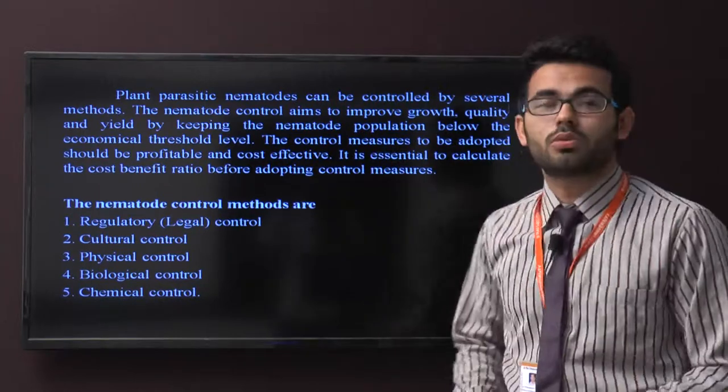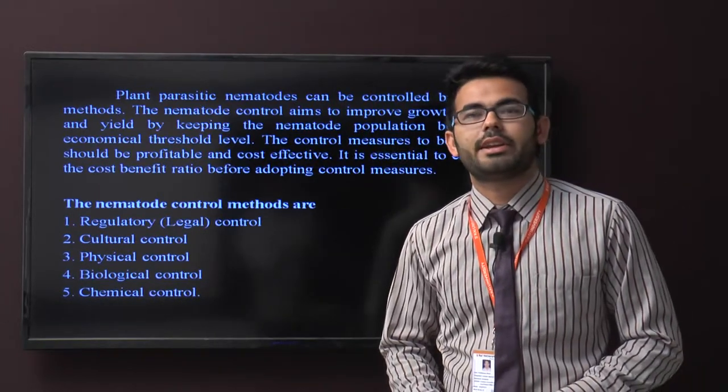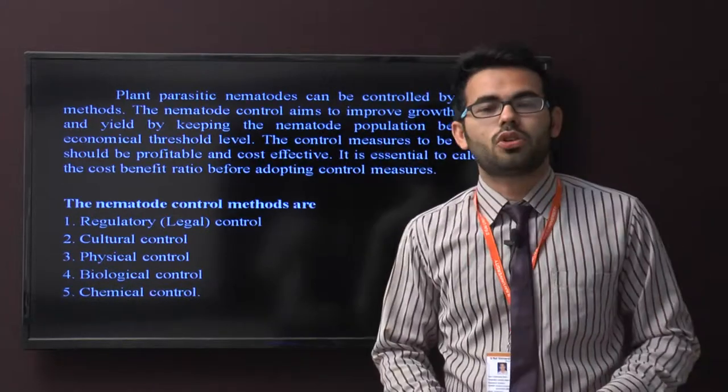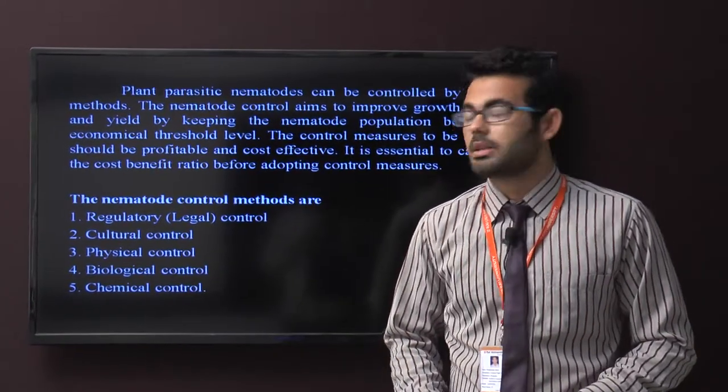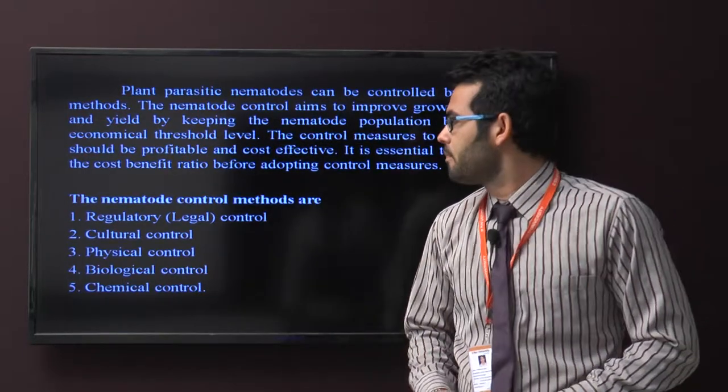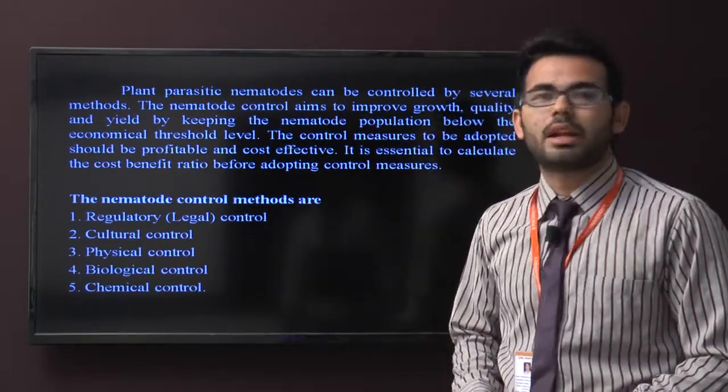Nematode control aims to improve the growth, quality, and yield of the crop by keeping the nematode population below the economic threshold level. There are different methods like regulatory control, cultural method, physical control, biological control, and chemical control.